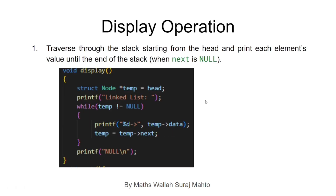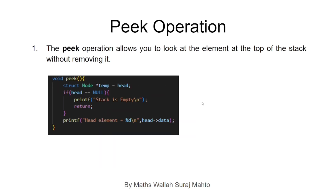The display operation has O(n) time complexity because we iterate through each element, traversing the entire stack. We use a while loop, creating a temp pointer, and it prints all values present in the stack. The fourth operation is peek: we return the topmost element of the stack without removing it, so we return the head node's data.